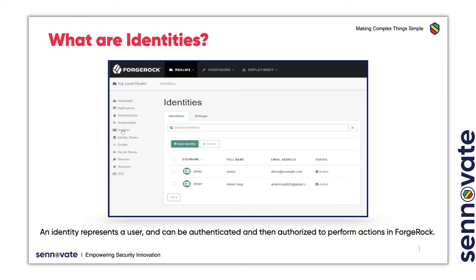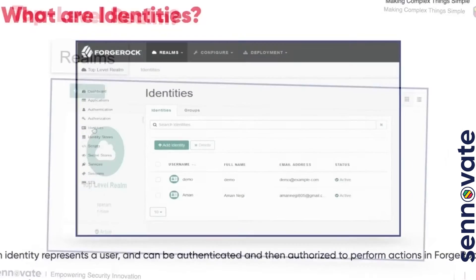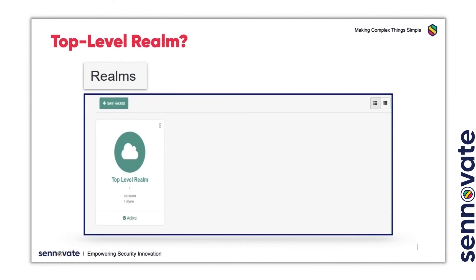The OpenAM installation process creates the top-level Realm which contains AM default configuration data. This Realm cannot be deleted or renamed since it is the root of the Realm hierarchy in AM. The top-level Realm can contain sub-Realms which can also contain other sub-Realms.